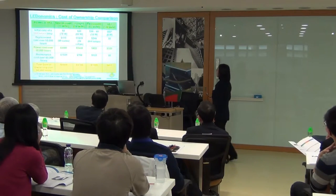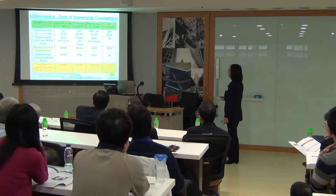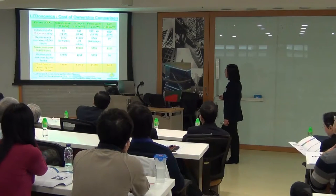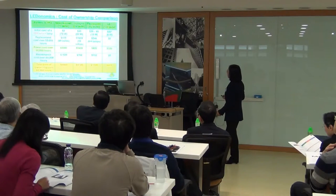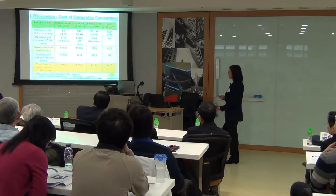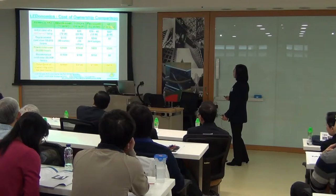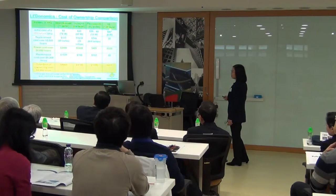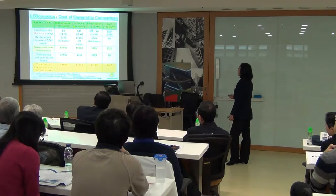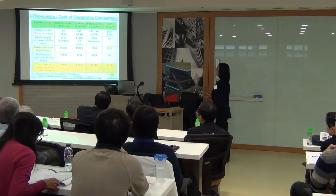This is a chart I have been showing for a number of years. I call it the 'LED-onomics' — you might call it the economy of scale — showing how using LEDs will change the cost of ownership compared to incandescent, halogen, fluorescent, and LED light. The last column is the LED efficiency in lumens per watt, which has been changing. Back maybe six or seven years ago it was 50 lumens per watt commercially available.